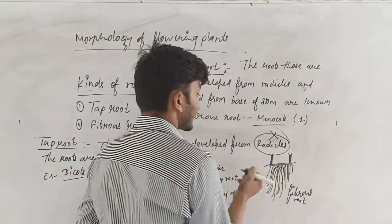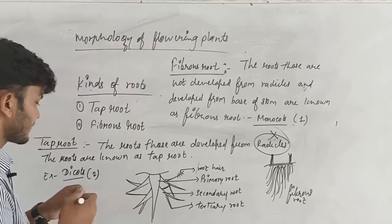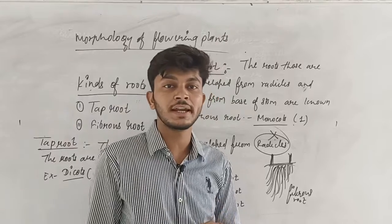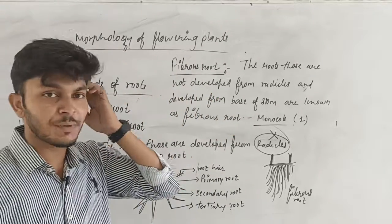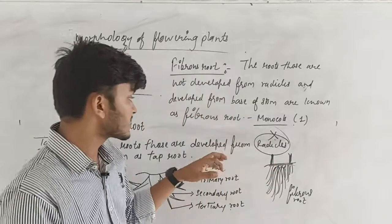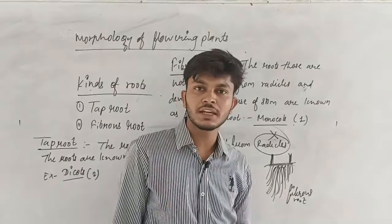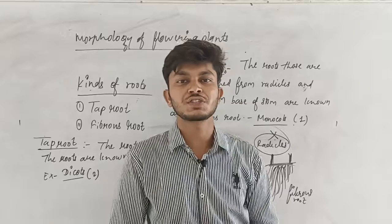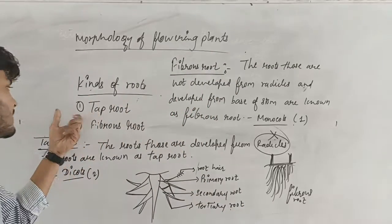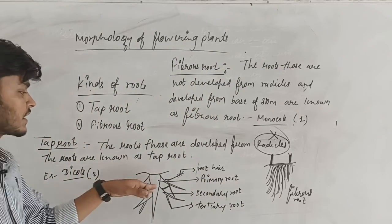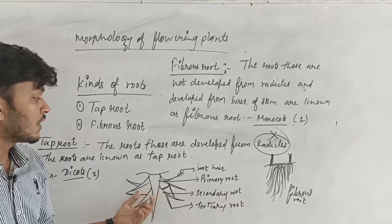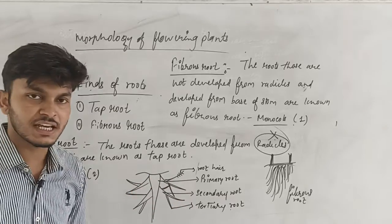Fibrous roots arise from base of stem. As fibrous roots, the stem roots are not strong. When these roots are in monocots, they can't provide rigidity. Monocot plants are weak — if the wind comes, they will fall. In the tap root, the primary root continues to penetrate the soil, and secondary and tertiary roots continue to arise from it.